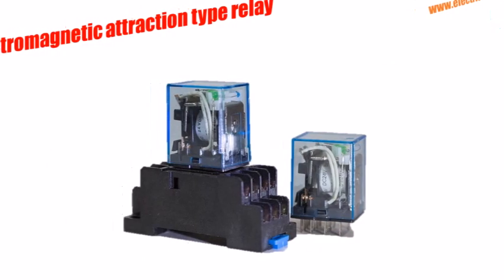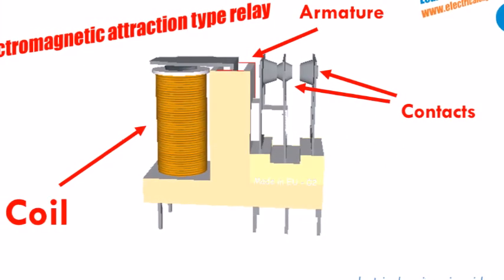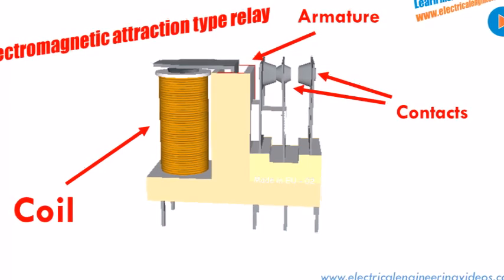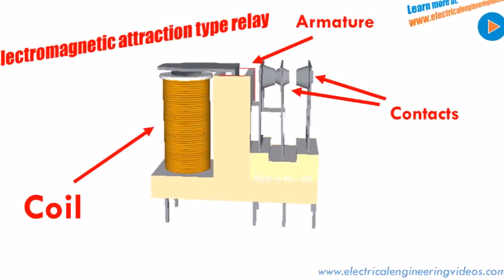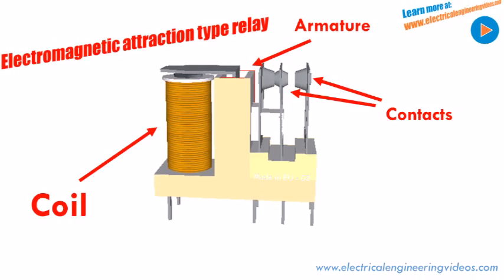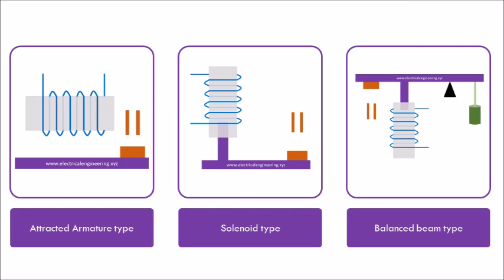Electromagnetic relays consist of three parts: the coil, the armature, and the contacts. The current passing through the coil produces motion in the armature, and the movable contacts either make or break the circuit. Electromagnetic relays are available in three different constructions: attracted armature type, solenoid type, and balanced beam type.